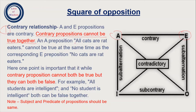For example, the A proposition 'All cats are red eaters' cannot be true at the same time as the corresponding E proposition 'No cats are red eaters.' We cannot say both propositions are true simultaneously, because one says all cats are red eaters and the other contradicts it. So either A is true or E is true — both cannot be true together.